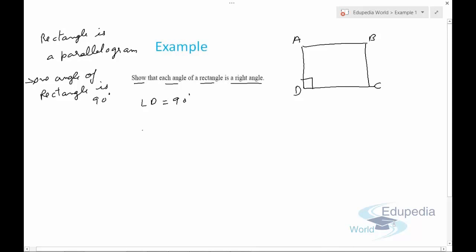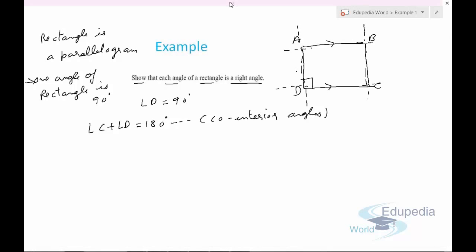Now, how can we find the other angles? We can say that angle C plus angle D equals 180 degrees because they are co-interior angles. If we extend these lines, these two lines are parallel and this line is a transversal.